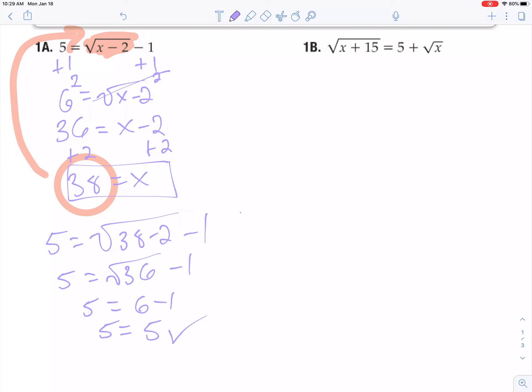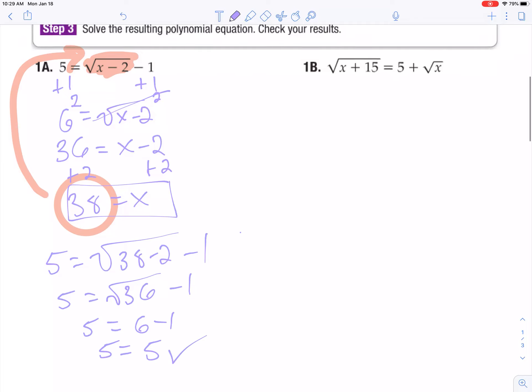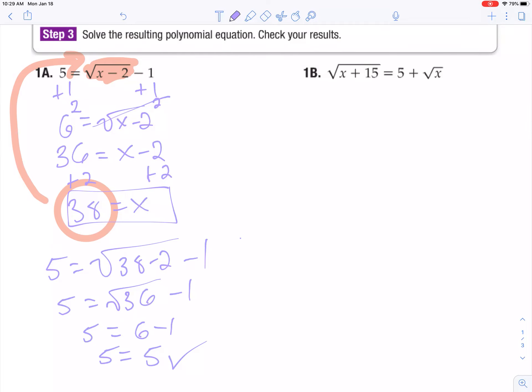Let's try 1B. Things go a little bit funky here on 1B. First of all, I have two radical signs, one on each side.